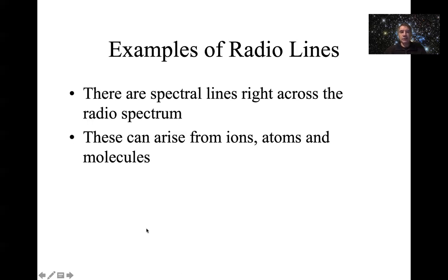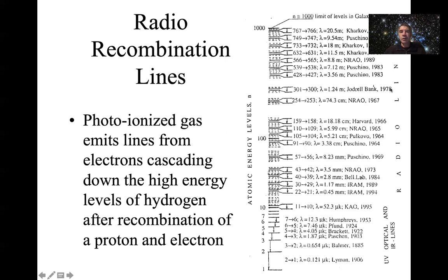I'm going to finish up looking at some examples of radio lines in the radio spectrum. These can arise from ions, atoms, and molecules. I'm going to start with an example called radio recombination lines.